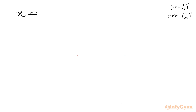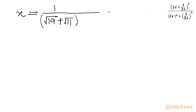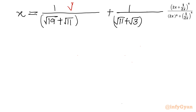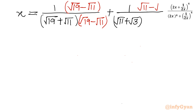Let us rewrite: x = 1/(√19 + √11) + 1/(√11 + √3). Now we rationalize the denominator by multiplying the first term by (√19 − √11)/(√19 − √11) and the second term by (√11 − √3)/(√11 − √3).